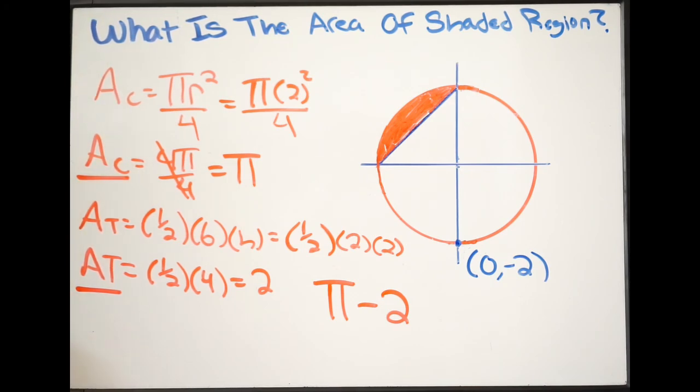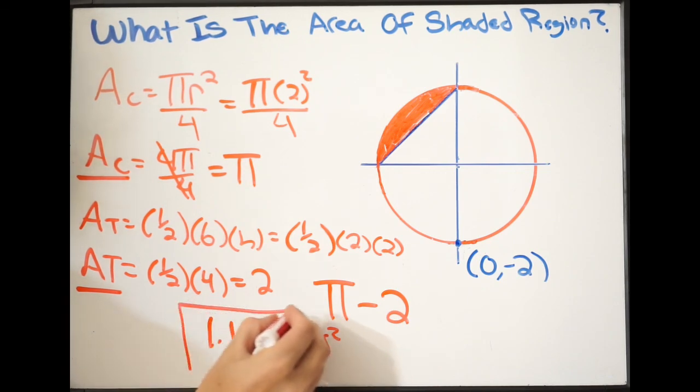So let's go ahead and just plug this into our calculator. So if we do pi minus 2, that's going to give us the following. We get 1.14 units squared. So this is going to be our final answer, and that is it.